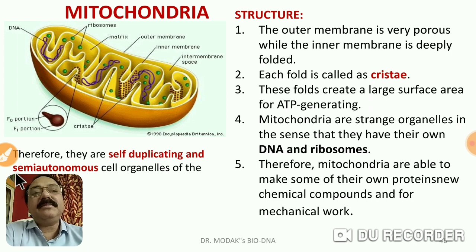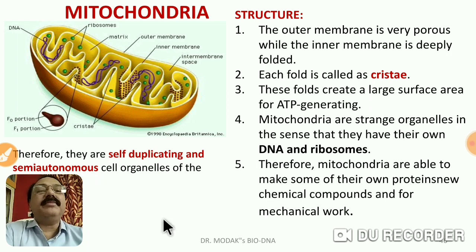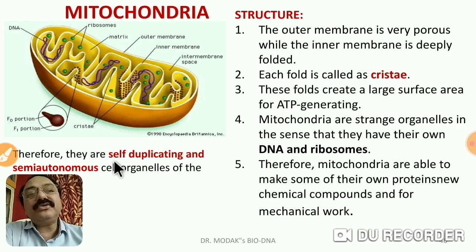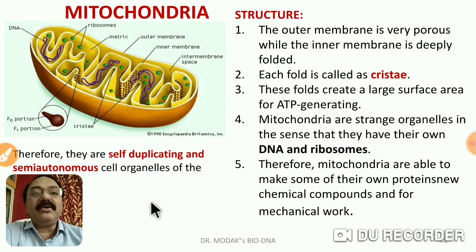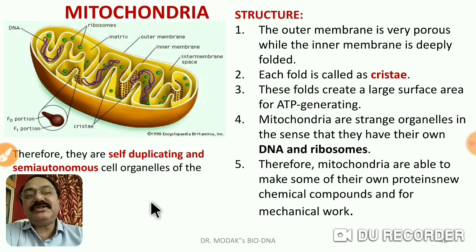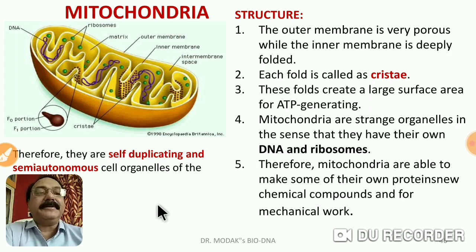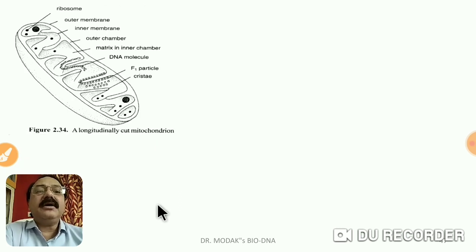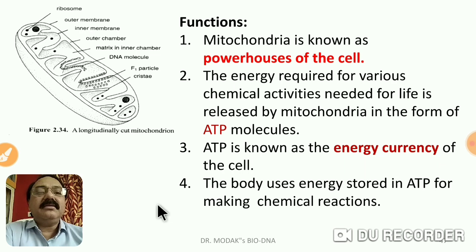Therefore, mitochondria is said to be semi-autonomous — 'semi' means half, 'autonomous' means self — it synthesizes its own material with the help of some material present in the cytoplasm. It is also called self-duplicating, meaning from one mitochondria, two, four, or many mitochondria can be produced, especially during cell division. Mitochondria is especially involved in chemical energy synthesis.